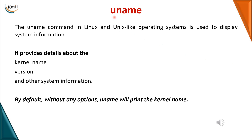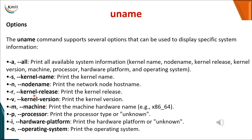The next command is uname, which gives information about the kernel name and the version of the system you are using. With 'uname -a', you get all details: the kernel name, node name, kernel release, kernel version, machine type (whether 32-bit or 64-bit), processor type, hardware platform, and the operating system. You can also use specific options to retrieve individual pieces of information.